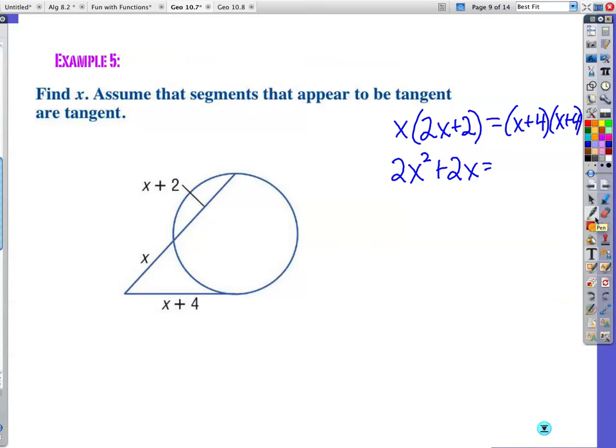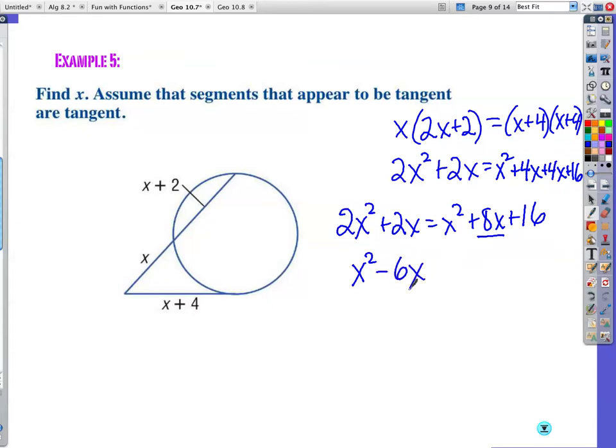We're going to foil that out. I got x squared. Outside term is 4x. Inside term is 4x. Last term is 16. Now I'm going to rewrite this a little simpler. 2x squared plus 2x is equal to x squared plus 8x plus 16. Subtract x squared from both sides because we want to set this thing equal to 0. So I'm moving this over here. I get 1x squared. This is going to be subtracted over here. So I get negative 6x. And I'm going to subtract 16. Set it equal to 0.